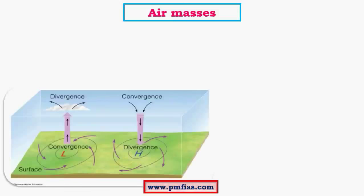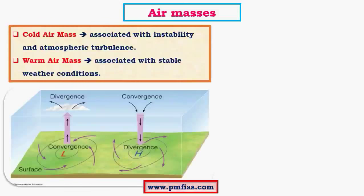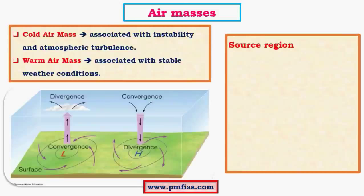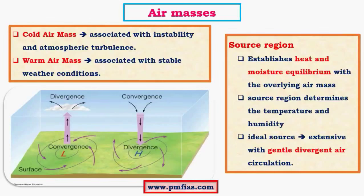First I will begin with airmasses. There are two kinds of airmasses: cold airmasses and warm airmasses. The cold airmasses are formed over the polar regions and the warm airmasses are produced over the tropical regions. The region above which these airmasses form are called source regions. Source regions supply the airmasses with heat — the temperature and other physical properties directly depend on the temperatures of the source region. So they establish a heat and moisture equilibrium with the source regions.